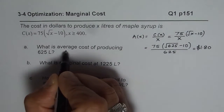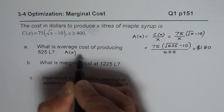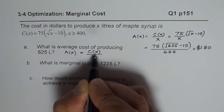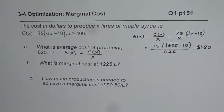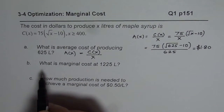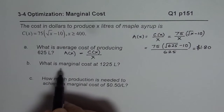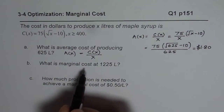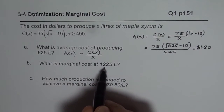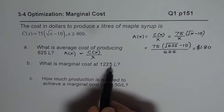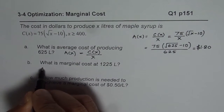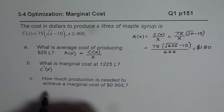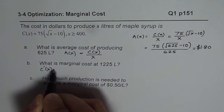Remember, average cost is cost of production divided by the items produced — that is how you should relate the terms. Now Part B: what is the marginal cost at 1225 liters? Marginal cost is the rate of change of cost when the production level is 1225, so marginal cost is C prime of x — the derivative of the cost function.